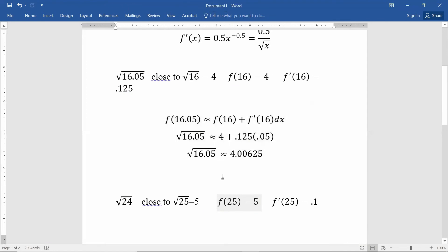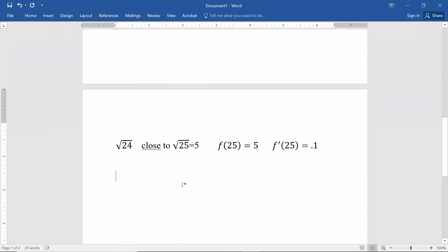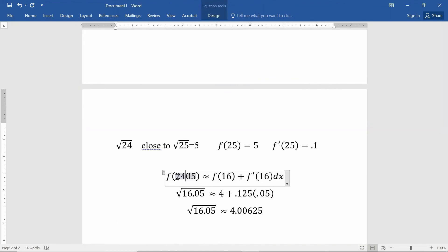I'm going to copy and paste what I did here and just change the numbers. f of 24 is equal to f of 25 plus the derivative of f at 25 multiplied times the change in x. In this case, the change in x is negative 1. So f of 25 is 5 plus the derivative at 25 is 0.1, and dx is negative 1. So change in x, we went from 25 to 24. That meant we went down by 1.